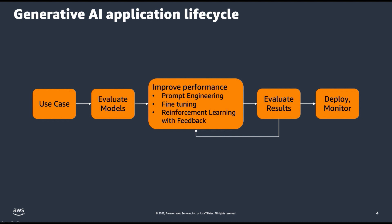Once you have narrowed down the set of models you are considering, we recommend that you employ one or more techniques to improve model performance, including prompt engineering, retrieval augmented generation, and or reinforcement learning with feedback. Then you will need to evaluate the results of your model. In the next video, we will cover recommended ways which are quantitative, automated, and repeatable to help you evaluate your large language model's performance. You may need to iterate on these performance improvement steps depending on how your evaluation metrics compare to your target.